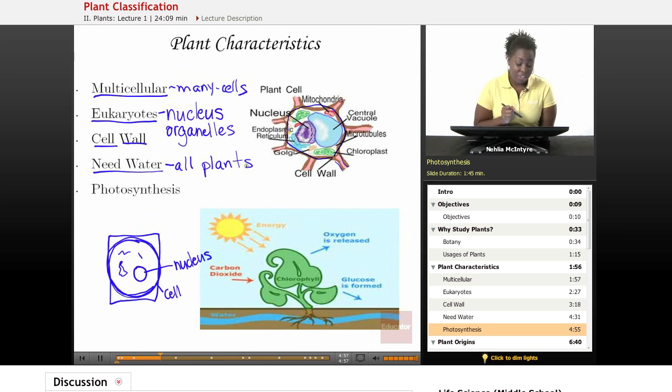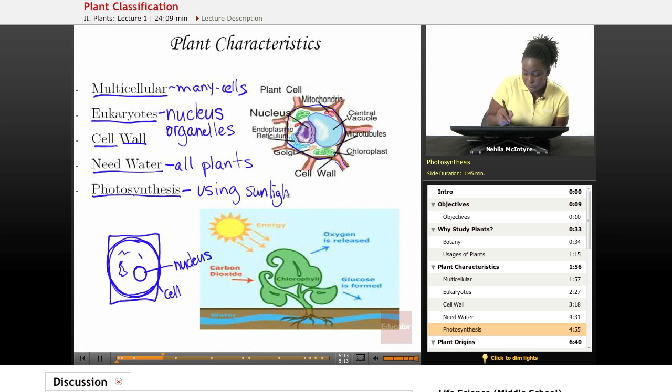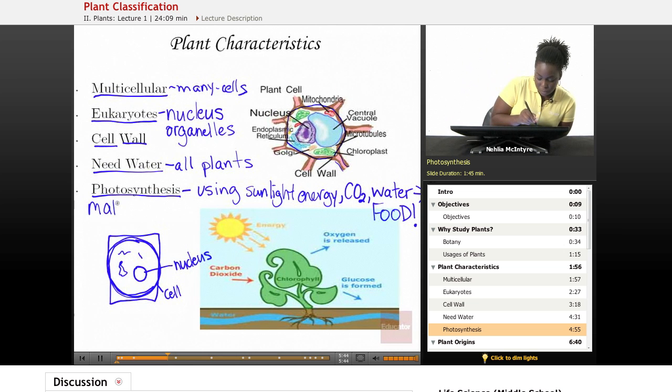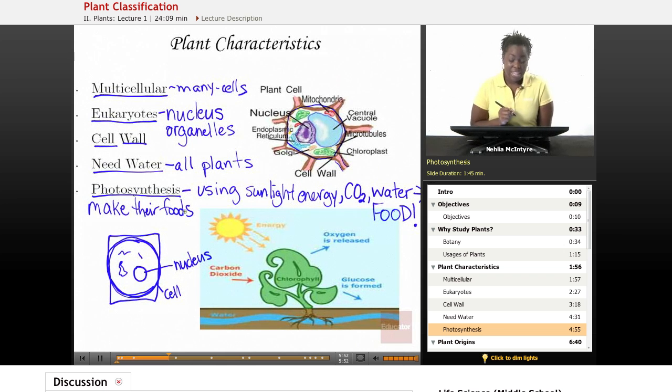And the last thing, and actually the most important function of plants, is that they all go through the process of photosynthesis. Photosynthesis is the process of using sunlight energy, which is the energy source of plants, carbon dioxide (CO2), and water to make food. Plants are special and they're different from animal cells and animals because they are able to make their own food. But animals, like humans, benefit because we can eat those plants and get that same source of energy.